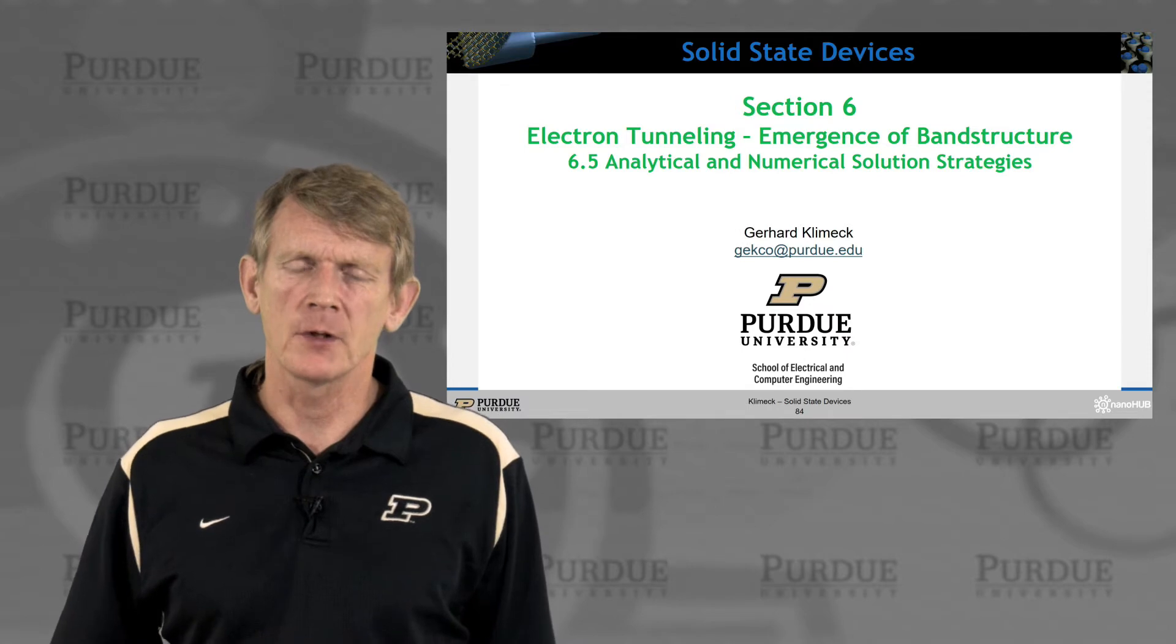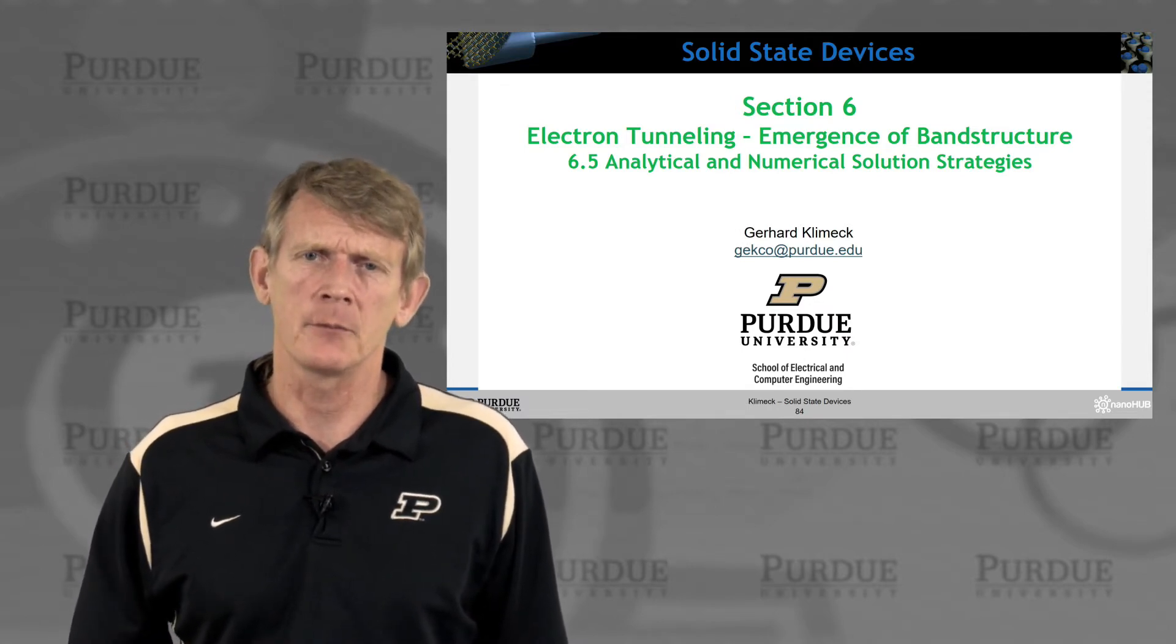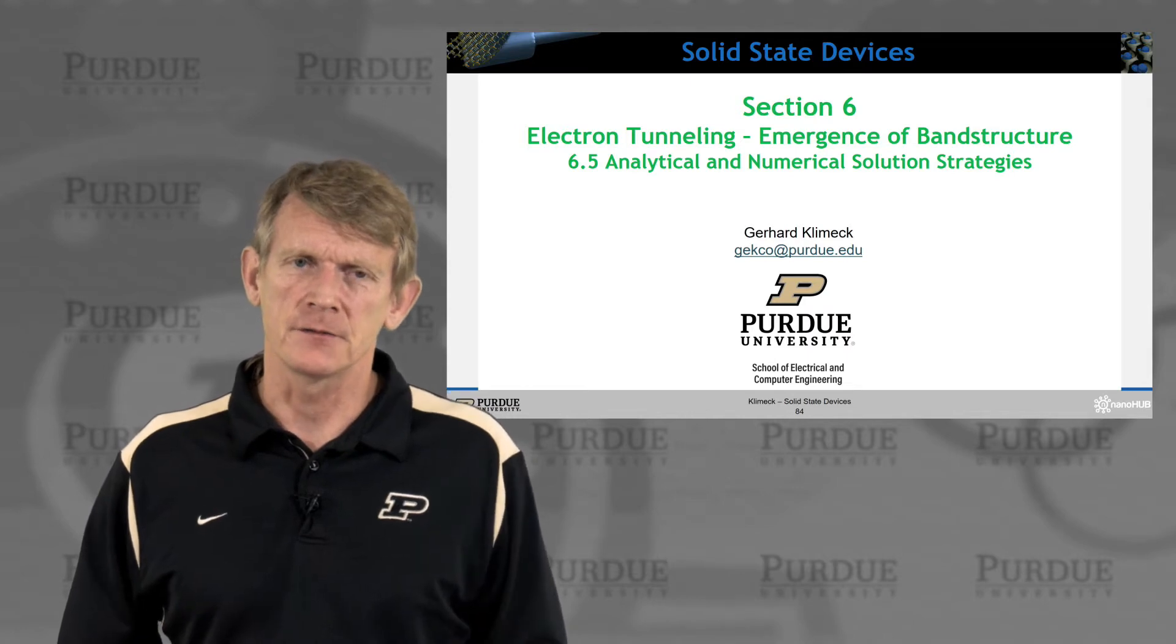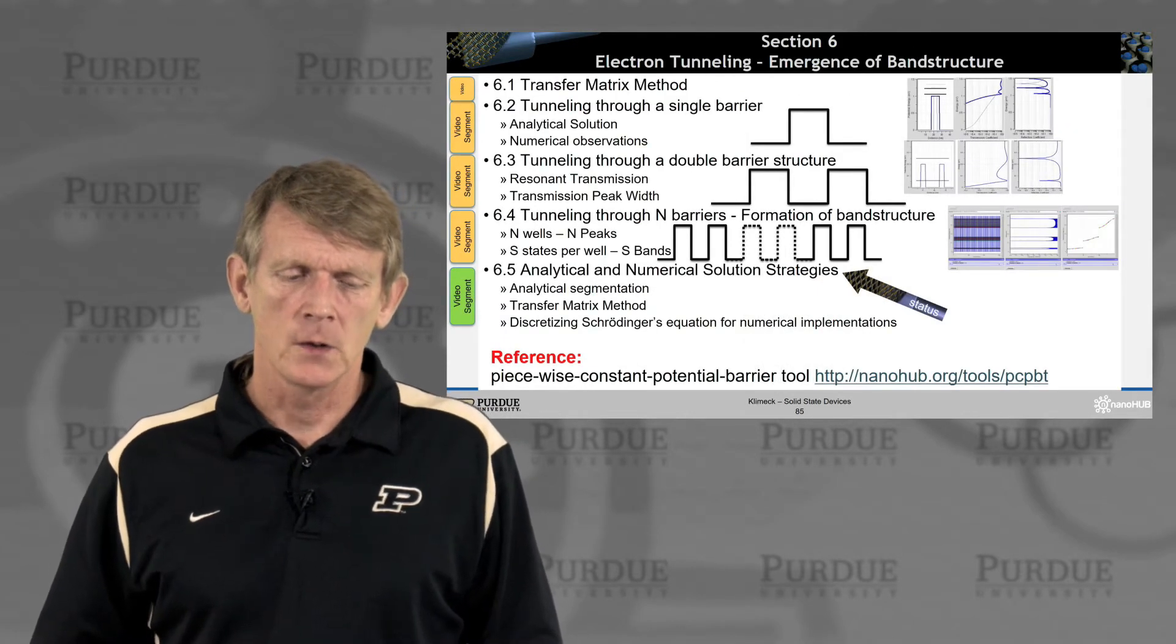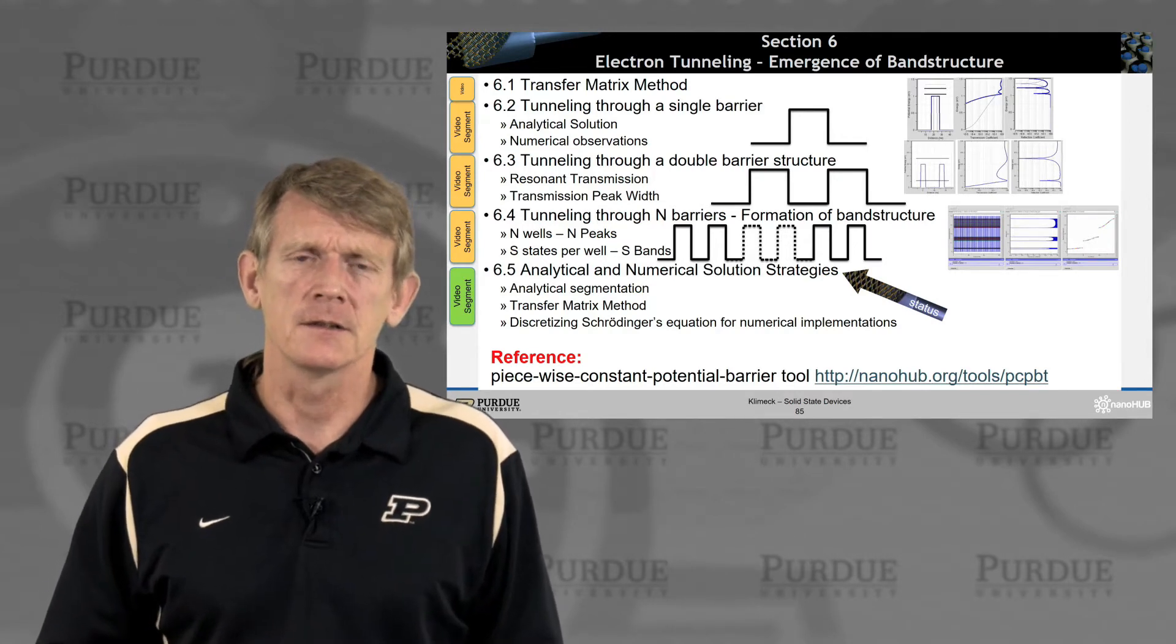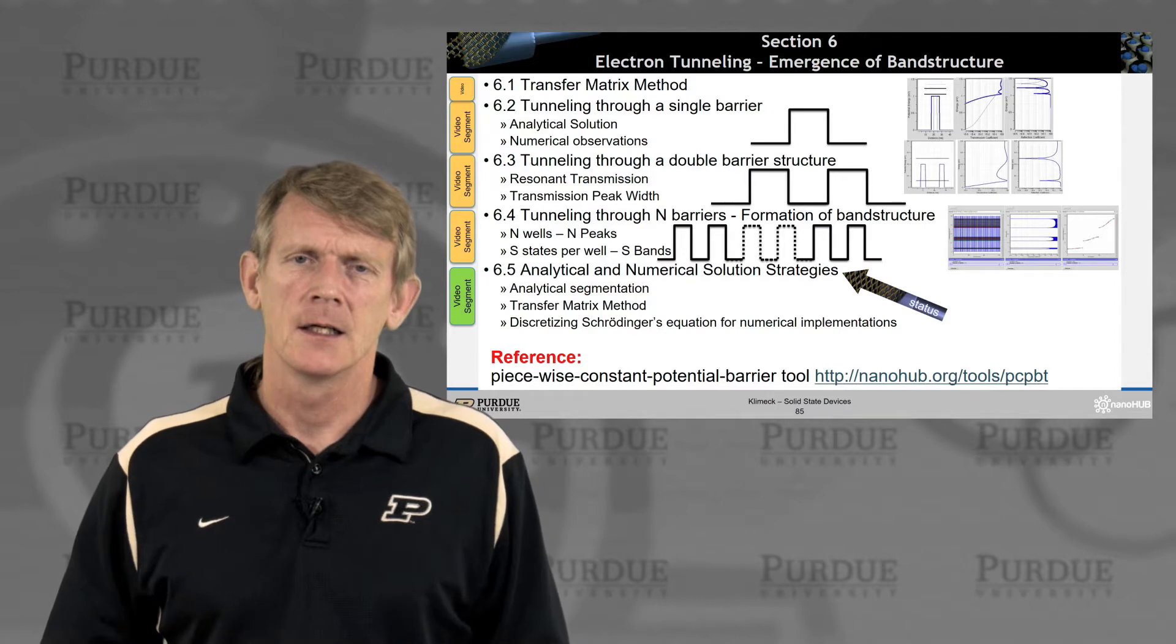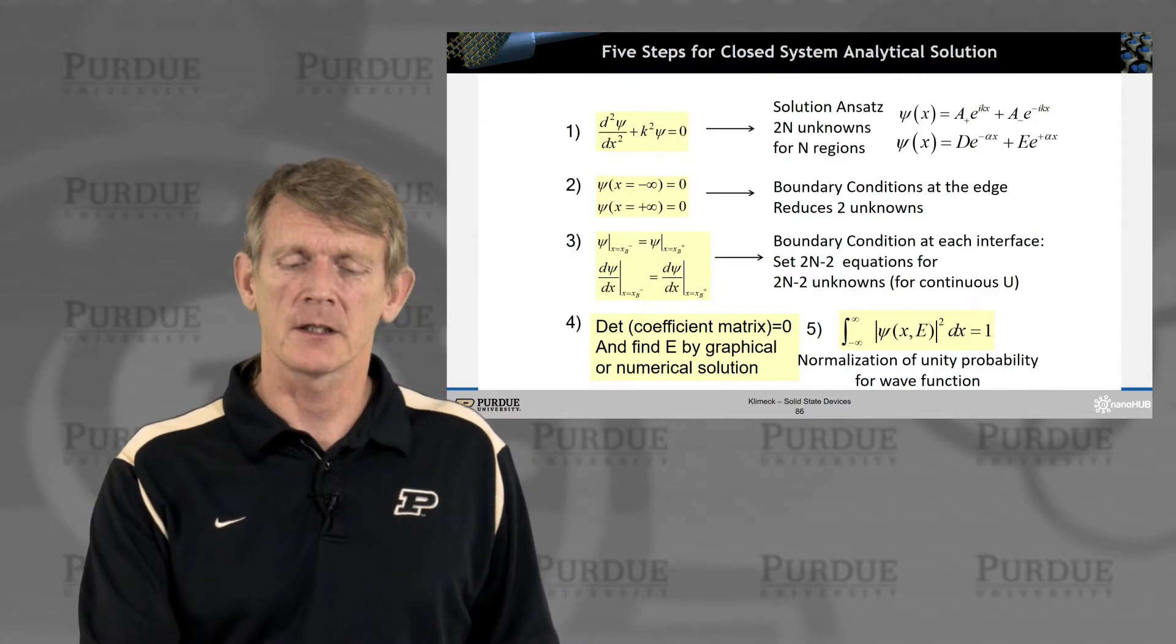Now I'm going to summarize some of the numerical approaches that we executed and give you a couple more strategies for numerical work. So we'll talk about the analytical segmentation and the transfer matrix method, and then how you discretize Schrödinger's equation for numerical expressions.